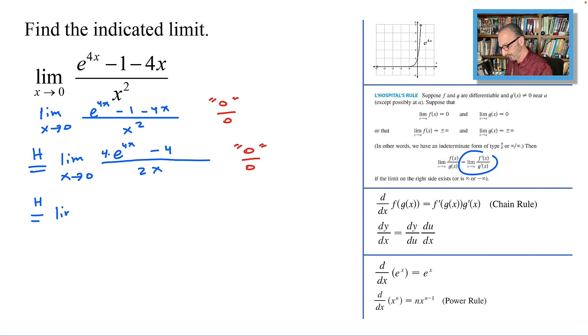Limit as x approaches 0: derivative of the top part will be e^(4x) times the derivative of 4x is another 4, and we have 4 up front that's going to make it 16, 4 times 4, minus 0 over 2. Now we don't need to write the minus 0, so let's cancel it.